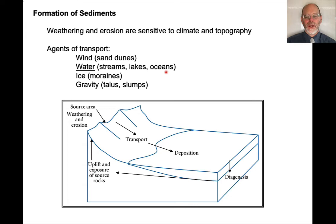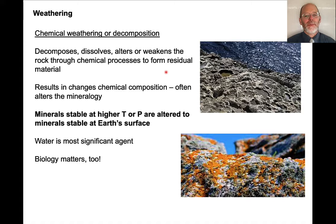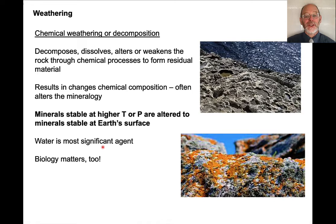Chemical weathering is an incredibly important process. It basically decomposes minerals, and this decomposition changes the chemical composition of the sediment and often also alters the mineralogy. Very generally, minerals that form at high temperature and pressure are more likely to be altered at Earth's surface than minerals that form at lower temperature or pressure. So the stability of a mineral at Earth's surface generally depends on the temperature and pressure at which it first crystallizes. Water is the most significant agent for altering and transporting material, but biology matters too — effects of lichen, trees, and other plants can be significant in weathering rocks.